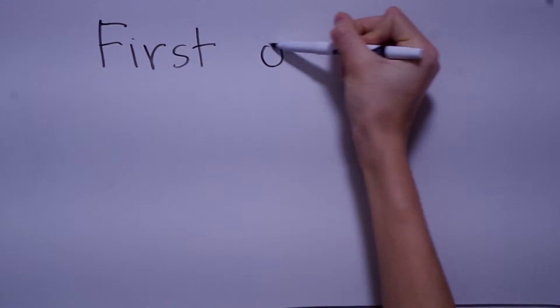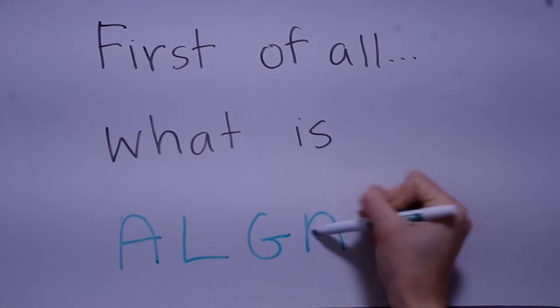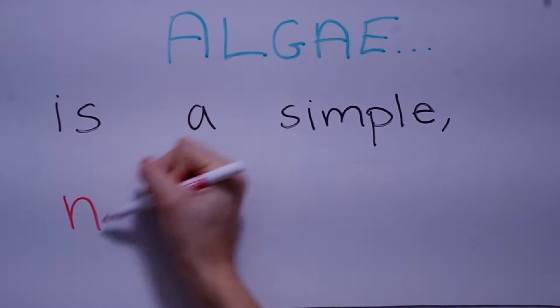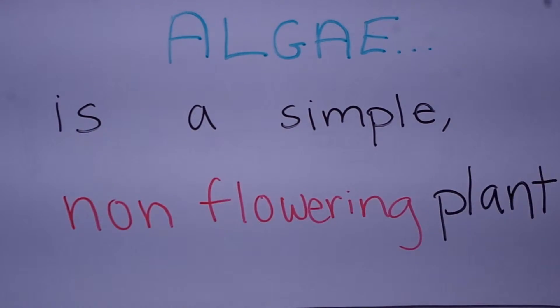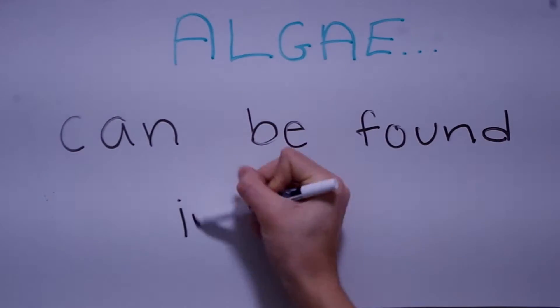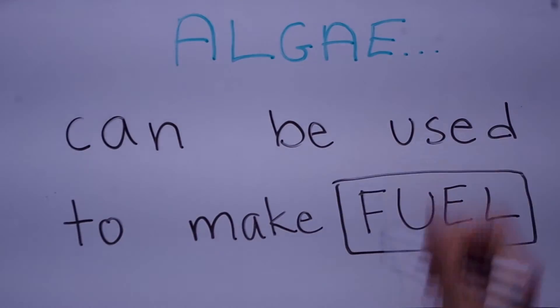Before we got started on the conversion of algae into biofuel, we had to do a little research on what algae is and how it grows. So, a simple definition of what algae really is: it's a simple, non-flowering plant. It lives in clusters, can be found in many different types of bodies of water, and can be used to make fuel.